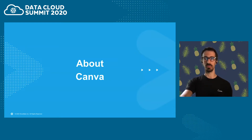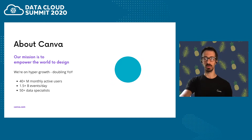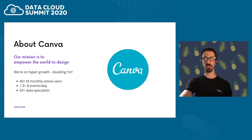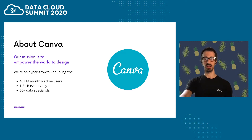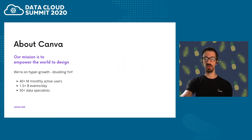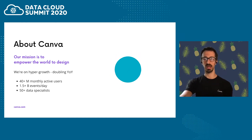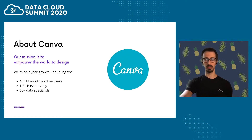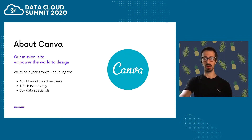At Canva, we are on a mission to empower the world to design. We believe that design should be easy and accessible to everyone, everywhere, on every device. Canva was born in 2013 as a small startup, but with huge ideas. Fast forward to 2020, we are in a phase of hyper growth, doubling in size year on year. We currently have 40 million active users per month, we collect more than 1.5 billion events per day, and we have more than 50 people working on our data-related teams.